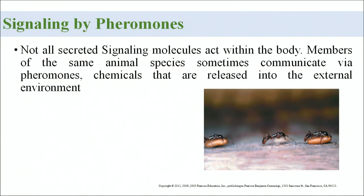An important type is signaling by pheromones. Unlike the previous signaling methods where molecules are secreted inside the body, pheromone signaling involves molecules released into the external environment. A key example is Asian army ants, which use lowered antennae to follow pheromone-marked trails as they carry pupae and larvae to their nest site.